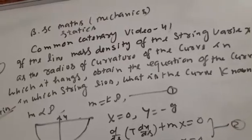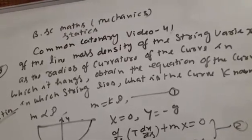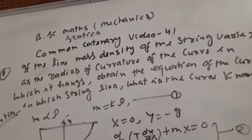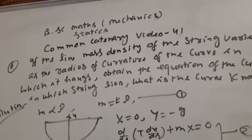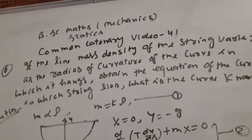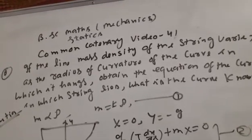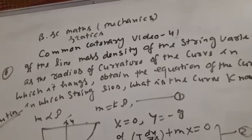My name is Cement Magenis. I'm going to talk to you in video number 41. Question is, if the line mass density of the string varies as the radius of curvature of the curve in which it hangs, obtain the equation of the curve.